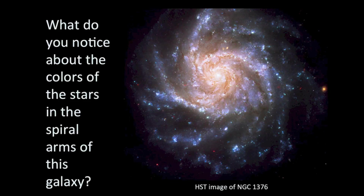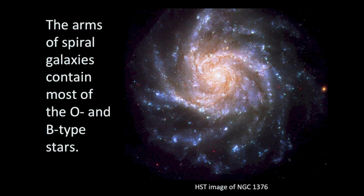Let's take a look at this image of a spiral galaxy — NGC 1376 — produced by collecting light with the Hubble Space Telescope. What do you notice about the colors of the stars in the spiral arms of this galaxy? What you mainly see is blue color. Blue stars are mainly O and B type stars, which means the arms of spiral galaxies contain most of the O and B type stars. We notice this with most big spiral galaxies.